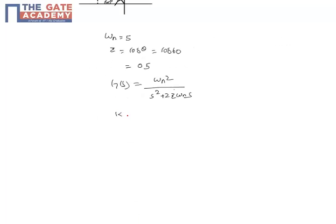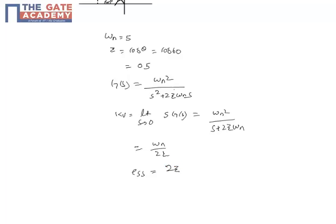K_v is equal to the limit as s tends to 0 of s·G(s). That gives omega_n squared divided by s in the denominator, which cancels, leaving (s + 2·zeta·omega_n). Applying s = 0, we get K_v = omega_n / (2·zeta). Therefore, the steady state error ESS for a ramp input equals 1/K_v = 2·zeta / omega_n.